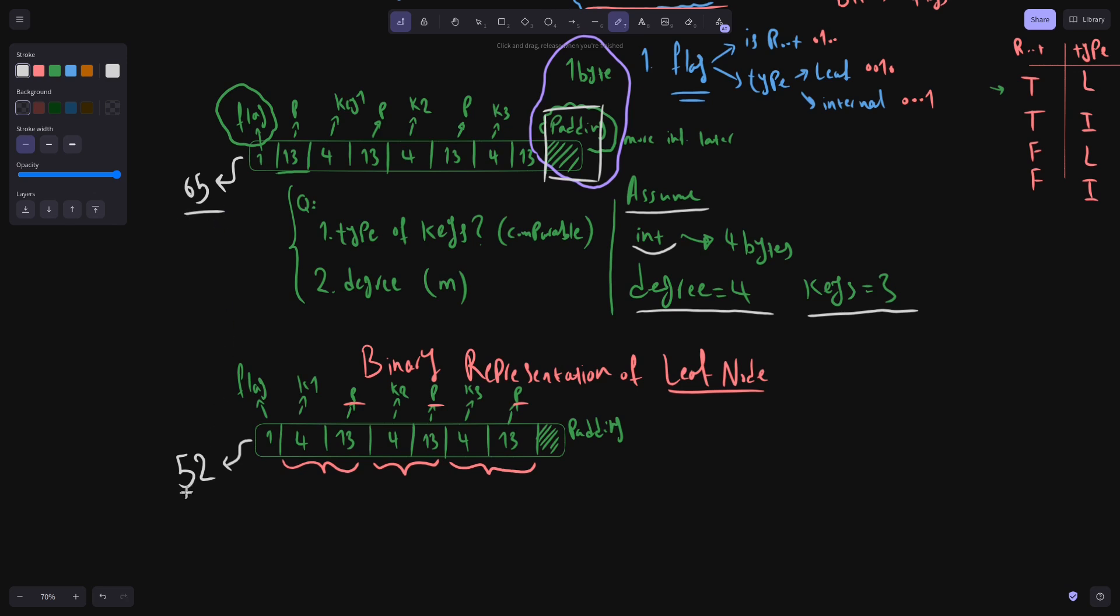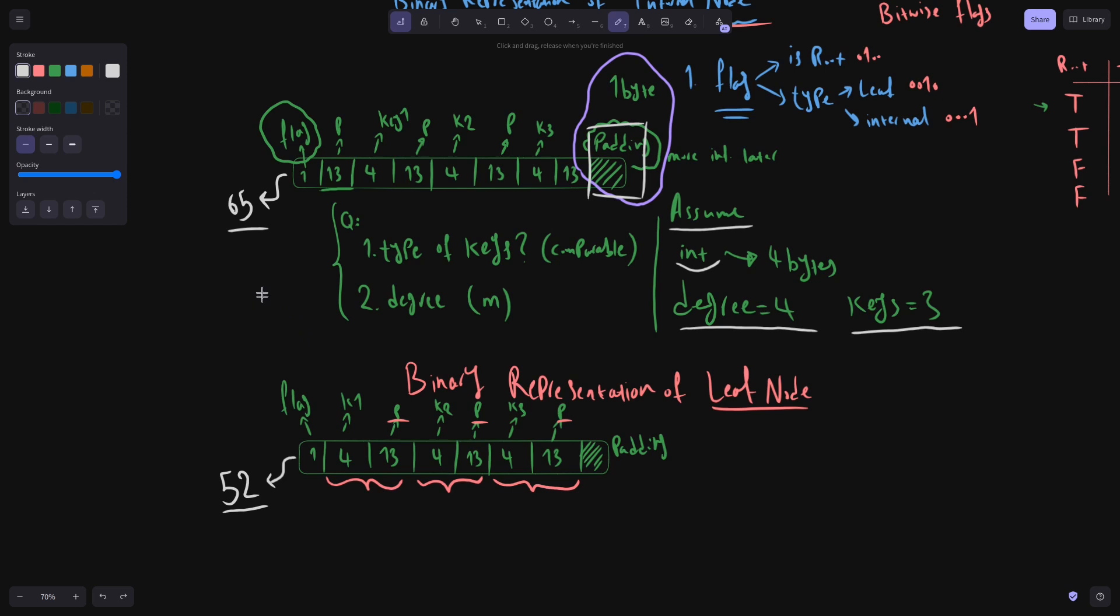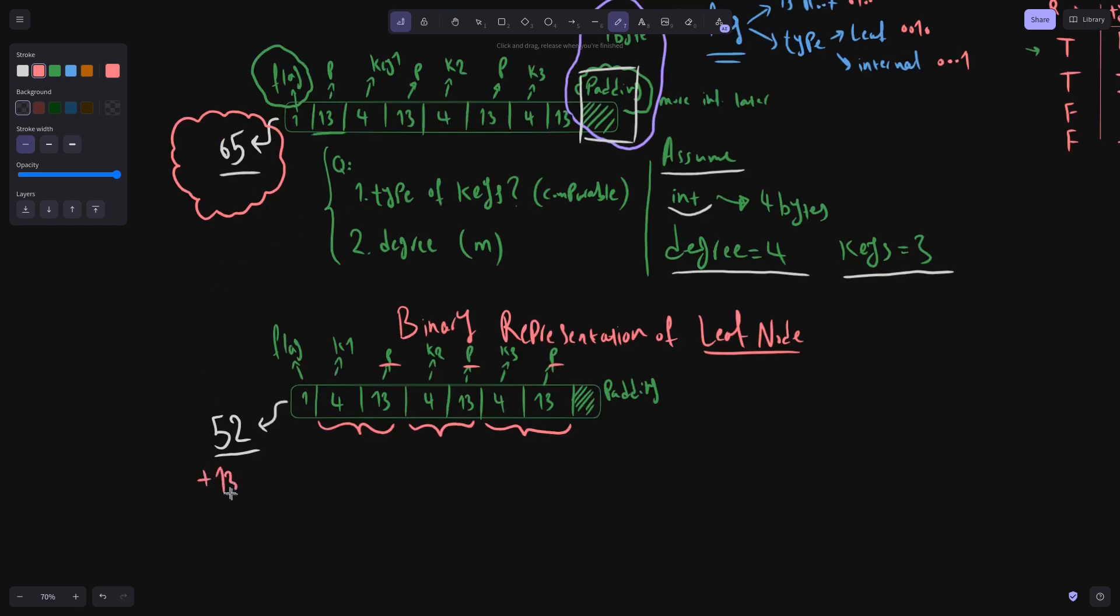So if we stick to this assumption that the type of the keys in our tree are integer, and the degree of the tree is four, so it has three keys, the sum of these numbers is 65, despite this padding which we will discuss now. And the sum of these numbers is 52. And these numbers represent the size of each node. However, for a perfect data alignment, these numbers should be equal. So we could say 65 can be the number of the bytes for each node. And always add 13 zero bytes to the end of a leaf node to make these numbers equal. And that 13 zero bytes is exactly what this padding is.